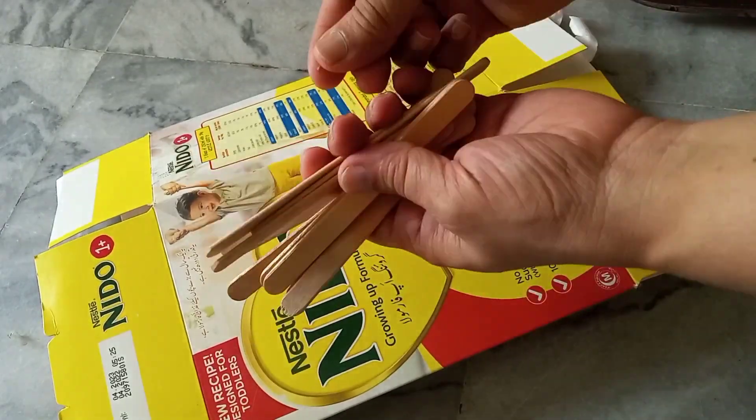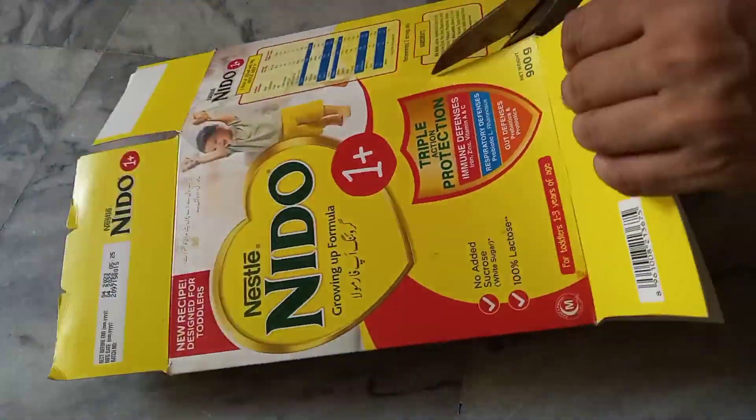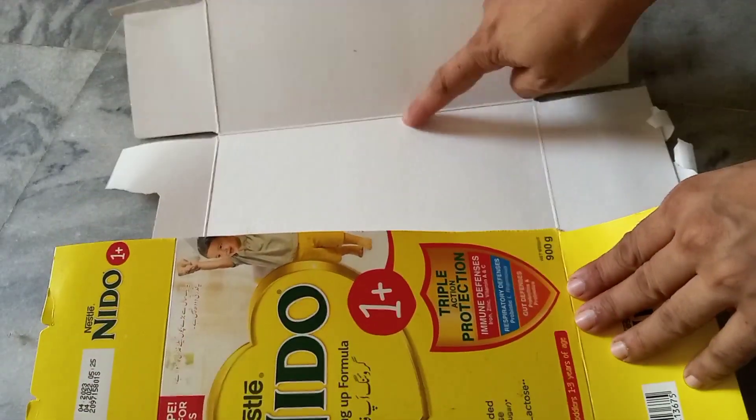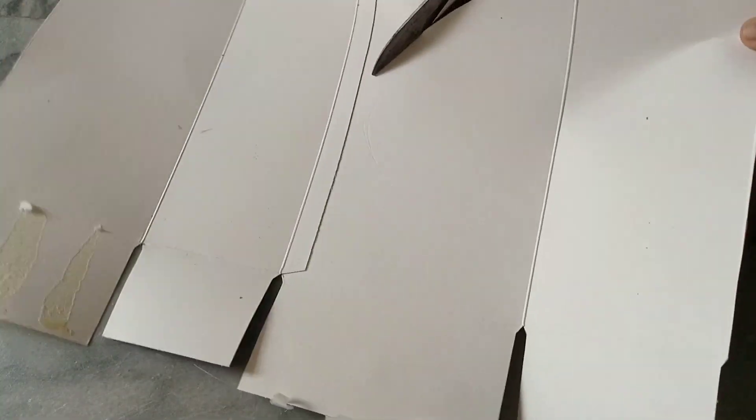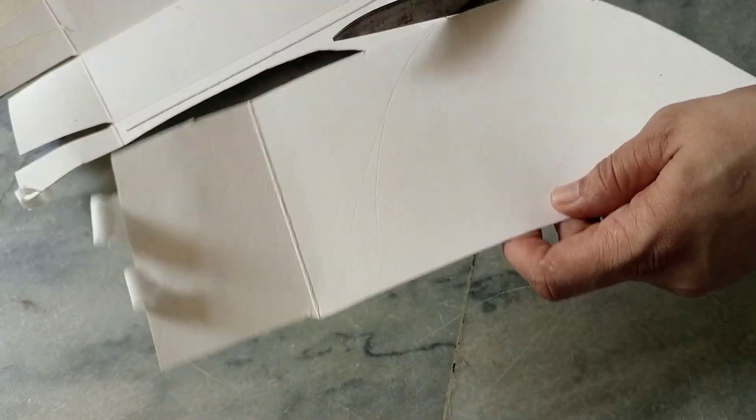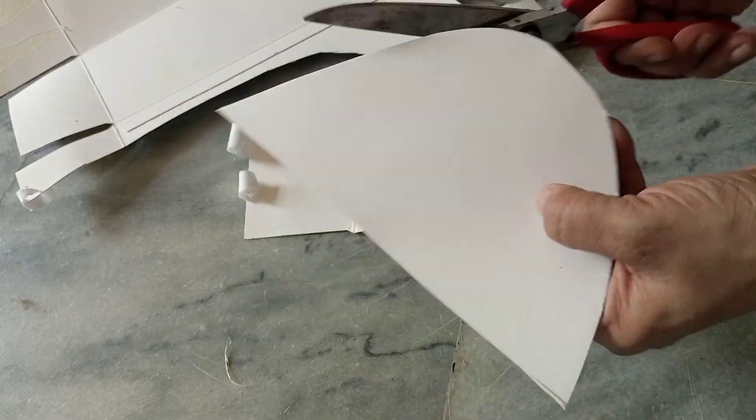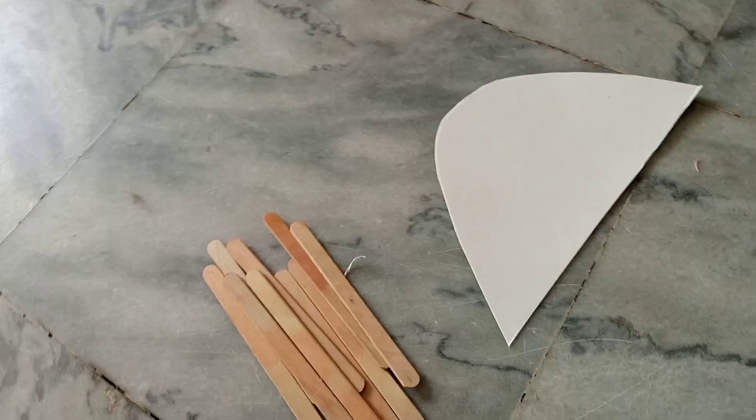Take ten ice cream sticks and take any milk cardboard and cut it. We will use this white part because you can easily color it and it's a very neat and white cardboard. You can use any cereal or egg cardboard as well. You will cut it in this shape and later on I will attach it with these ice cream sticks.